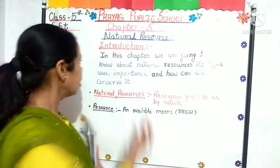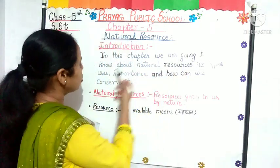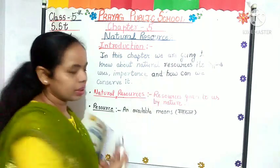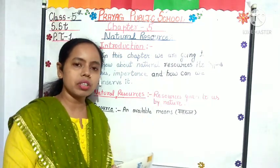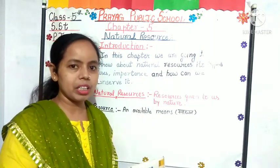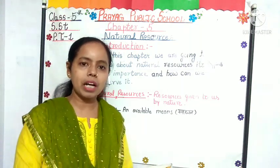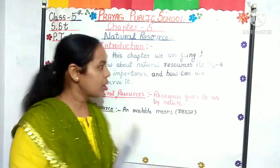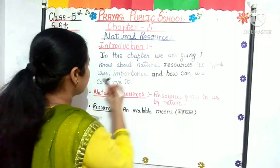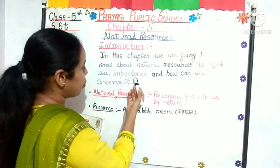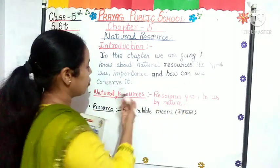In this chapter, we are going to know about Natural Resources. Natural Resources is called in Hindi, Prakritik Shrold. We will know its types, uses, importance, and how we can conserve it.